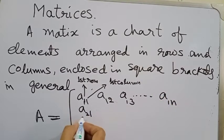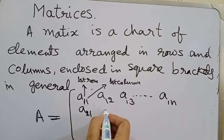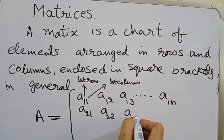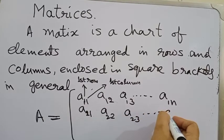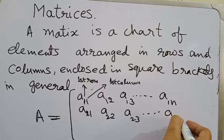A21, second row, first column. A22, second row, second column. A23, second row, third column up to A2N.